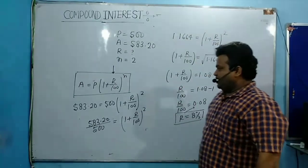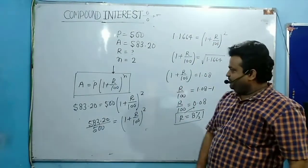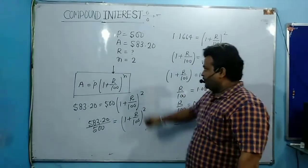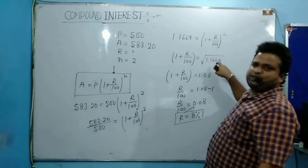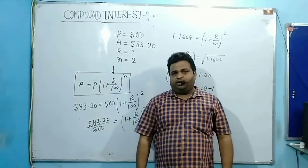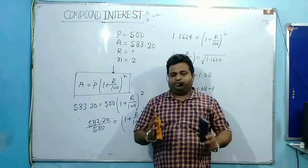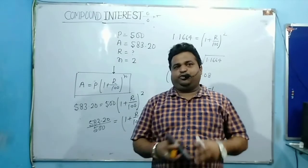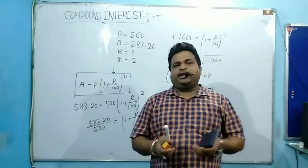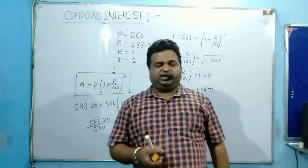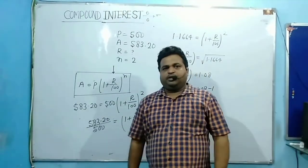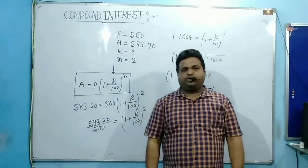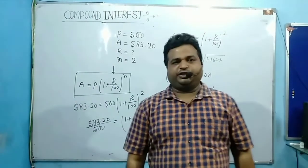In the previous problem we calculated n using the power-matching method. When r is unknown and the power is 2, you take the square root to find r. This is how you calculate n, r, and A values in compound interest problems. Some mixed problems will be discussed in the next lecture video. Thank you so much for watching.